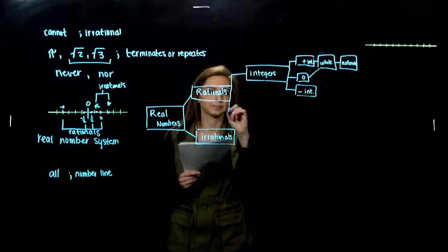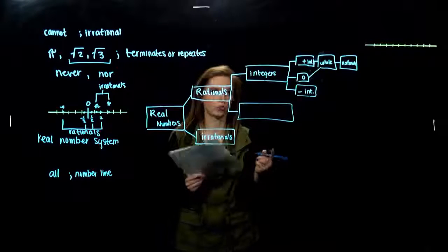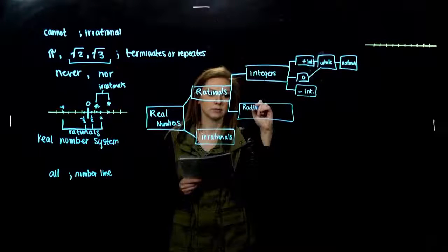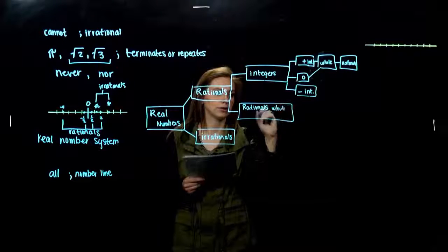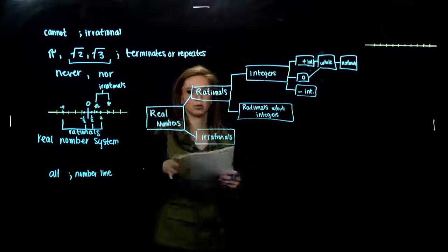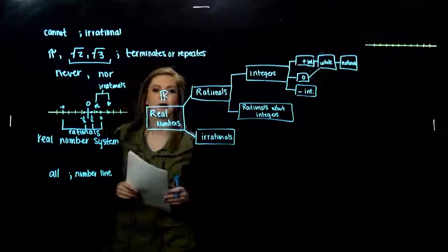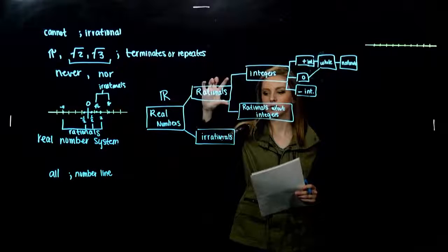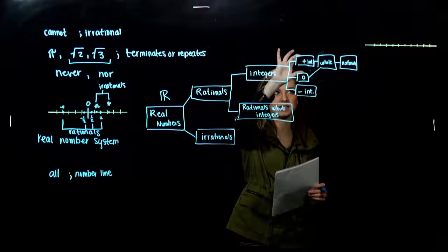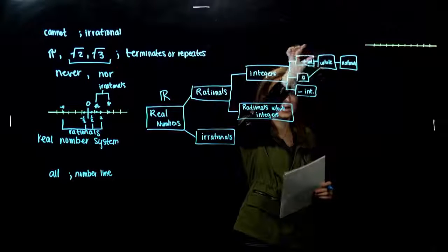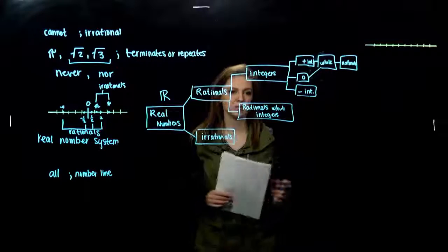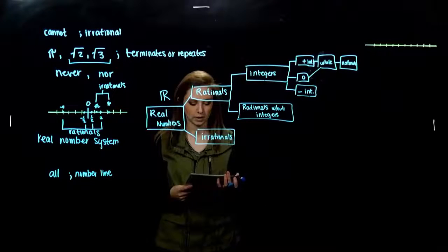From the rationals, we also have ones that aren't integers — fractions. These include the whole numbers, positive, negative, zero, and anything that can be written as a fraction. So rationals minus the integers. The real numbers are the big set. You'll see the notation for the real numbers in math. We have rationals and irrationals. From the rationals we've got integers — positives, zero, and negatives. Positives and zeros are the whole numbers, and inside the whole numbers are the naturals — just the counting numbers without zero.